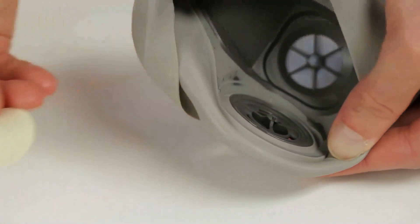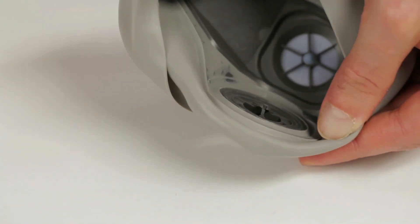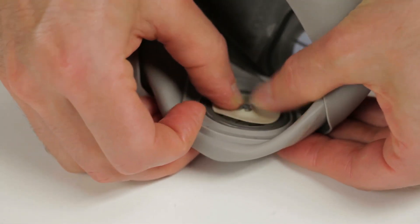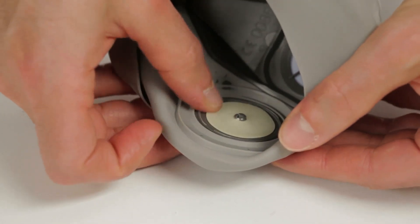To replace the inhalation valve, press the hole of the valve over the center post on the valve seat. Be certain the valve is fully engaged through the valve post and lays flat.